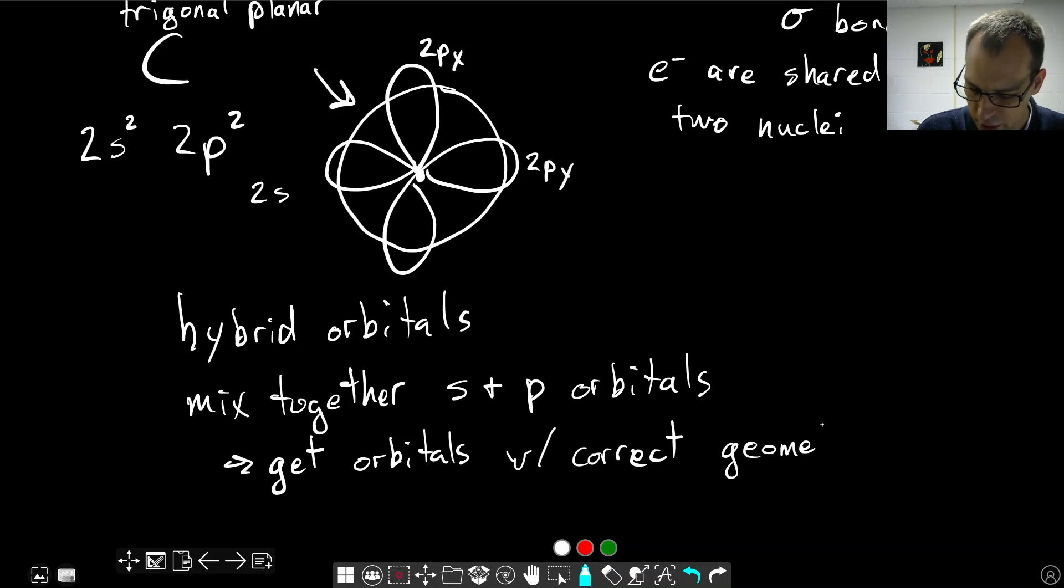So all of the geometries and things that you've been learning with VSEPR theory are still going to apply here. It's just now we're thinking about, what is the actual quantum mechanics look like a little bit behind this? And that's the idea of valence bond theory, is we're trying to understand what's happening with these atomic orbitals, and how are they going to look to make the correct shapes that we learn.